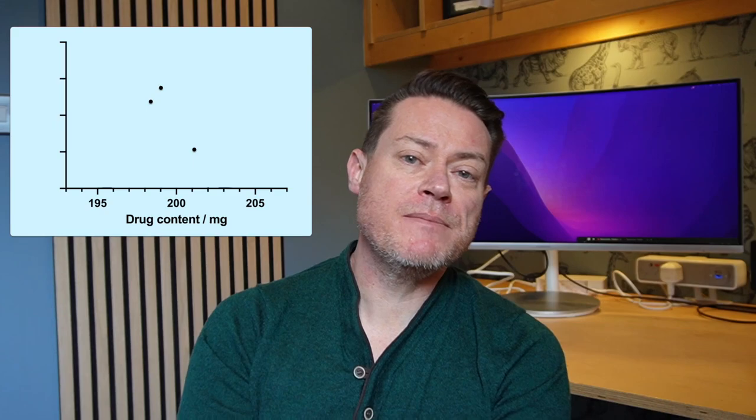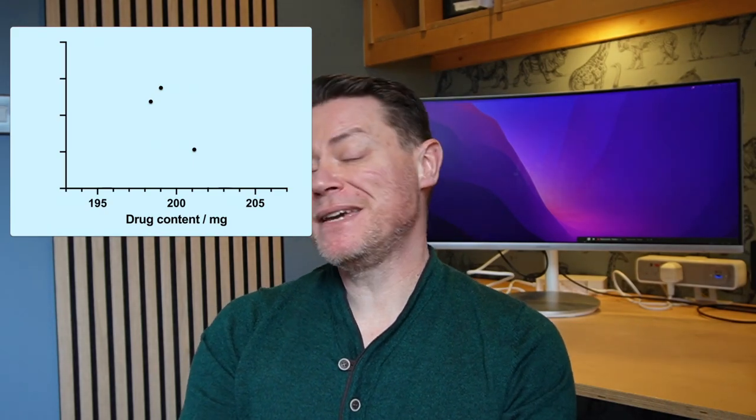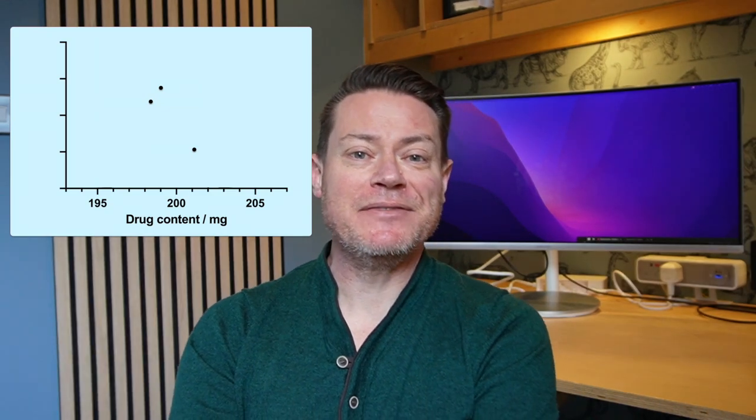I hope you can see at this point why making only three repeat measurements of a value is really not a good idea. Yes, we can determine a mean and standard deviation from just three data points, and from those generate a frequency distribution — but how much information does that really give us about how our data are distributed? It's like trying to plot just three points and drawing a distribution through them. This is why it's much better to make as many repeat measurements as you can.